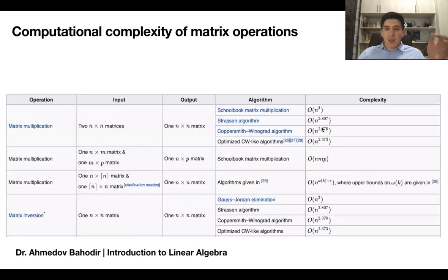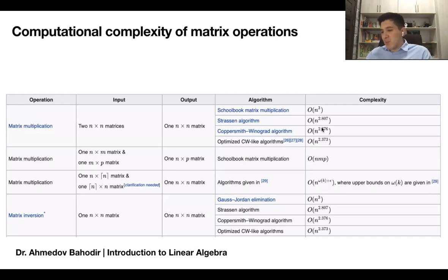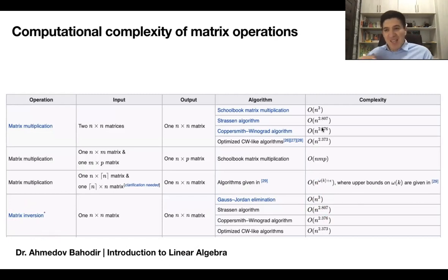The next topic we're going to discuss includes algorithms for how to solve these kinds of systems. It's really important for us to learn about something called computational complexity. Complexity usually comes with powers of n — for example n cubed, n squared, or n — where n is basically the size of the problem. For example, finding the inverse of a matrix using something called Gauss-Jordan elimination requires n cubed operations, where n is the size of the matrix.